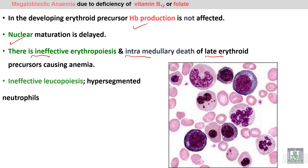Because of the DNA defect due to B12 and folate deficiency, it also leads to ineffective leukopoiesis and production of abnormal white blood cells called hypersegmented neutrophils. You can see here hypersegmented neutrophils — the lobes or segments of the neutrophil number more than 5, so it is a hypersegmented neutrophil.